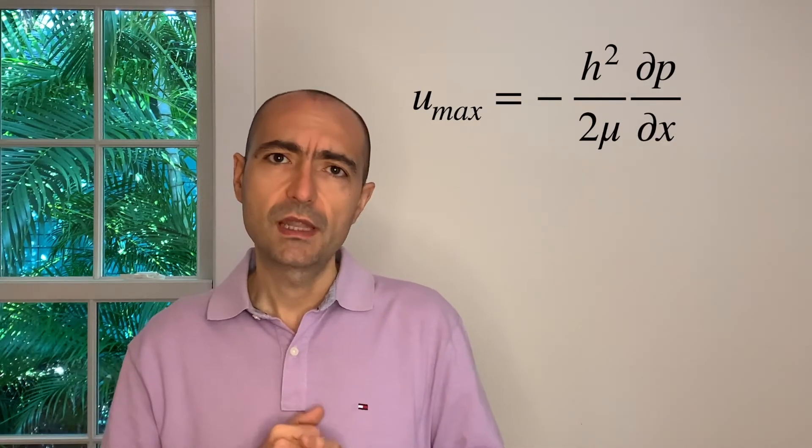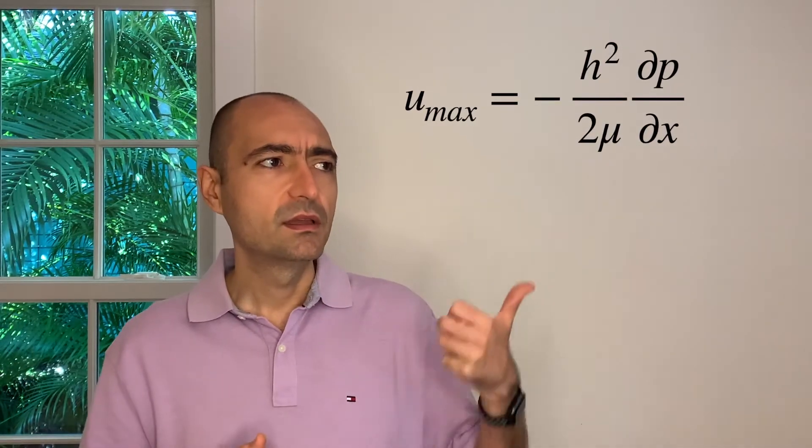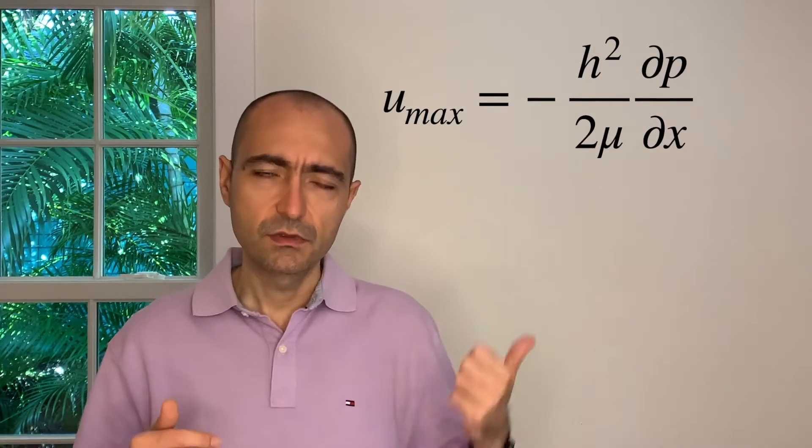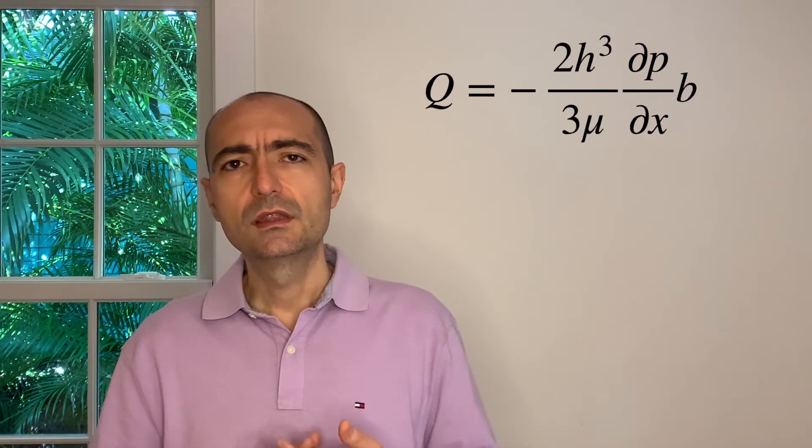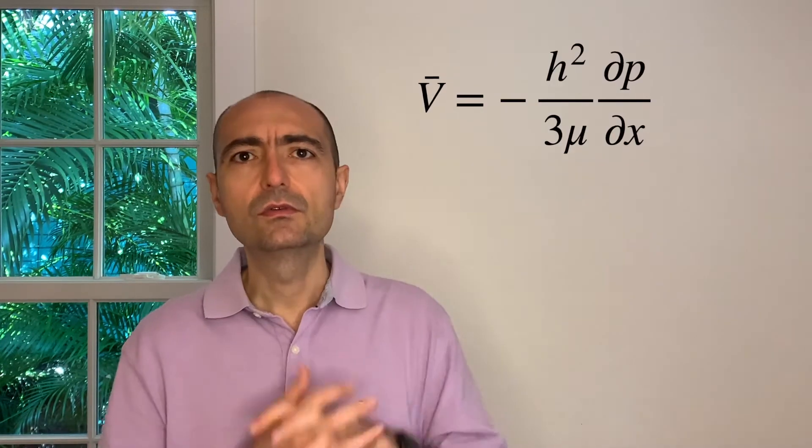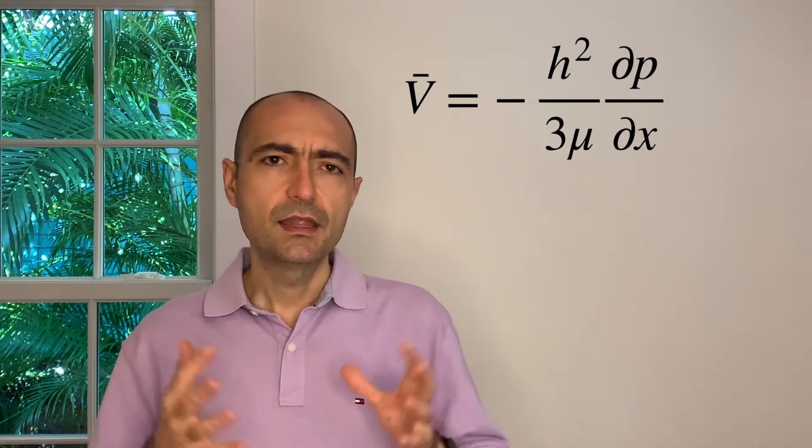I talked about the maximum velocity. I talked about why the maximum velocity is almost like a negative but it is not, right? We discussed that. I looked at the volumetric flow rate. I looked at the mean velocity between two parallel plates. And the name of this particular flow is typically Poiseuille flow.